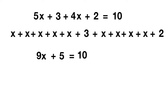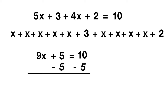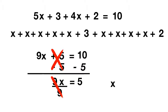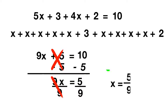We cancel out the plus 5 by subtracting 5 from both sides. The plus 5 and minus 5 cancel out, leaving 9x. On the other side, 10 minus 5 gives us 5. Now we divide by 9 to cancel out the 9, leaving just x. On the other side, 5 divided by 9 gives us x equals 5 ninths.